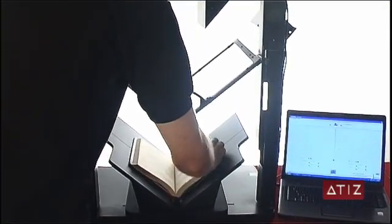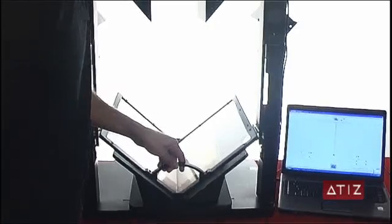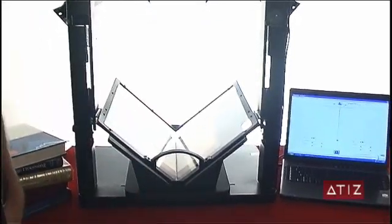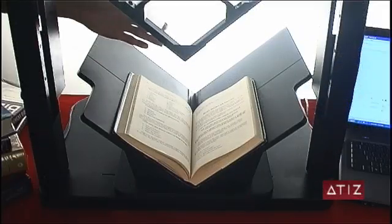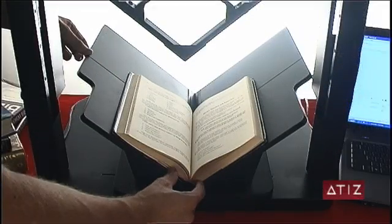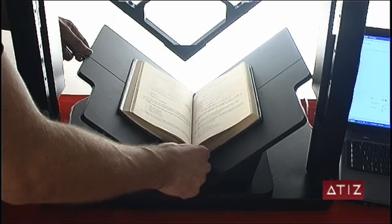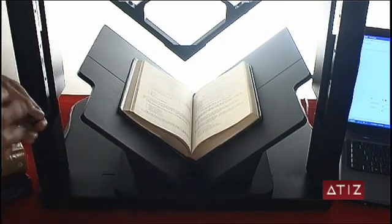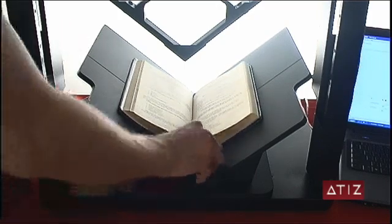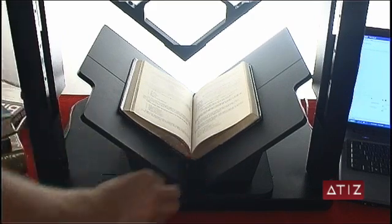One of the great features of the BookSnap is the V-shaped cradle. The V-shaped cradle has a centering guideline which assists the user in correctly aligning the book for the cameras. Once this is done, the stabilizing magnets are put in place to prevent the book from moving around during the scanning process.